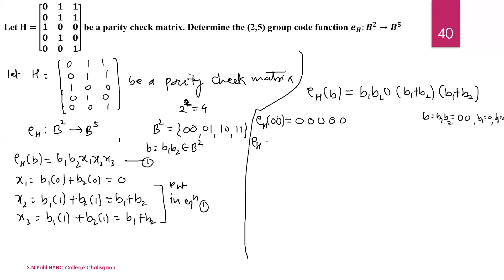Next, the encoding function operates on (0,1). Here b1 = 0 and b2 = 1. The first two digits are 0,1 as they are. The third is fixed at 0. Now b1 + b2 = 0 + 1 = 1. Similarly, the last element is also 1. So E_H(0,1) = (0,1,0,1,1).